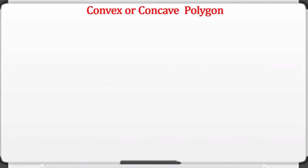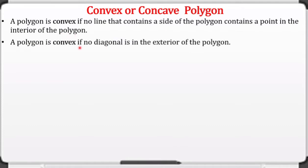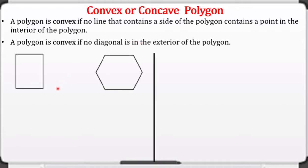Now let us classify polygons as convex or concave. When do you say it's convex? A polygon is convex if no line that contains a side of the polygon contains a point in the interior of the polygon, or if no diagonal lies in the exterior of the polygon.